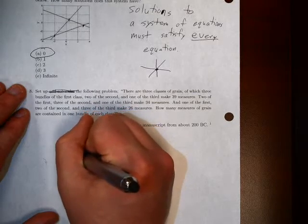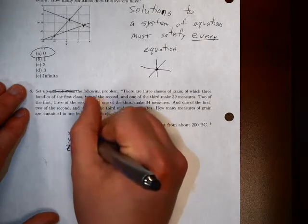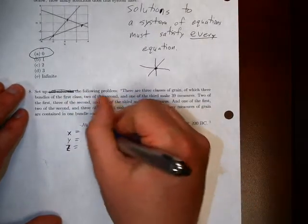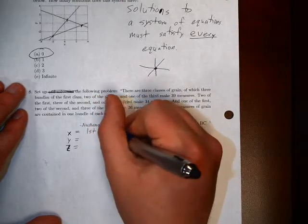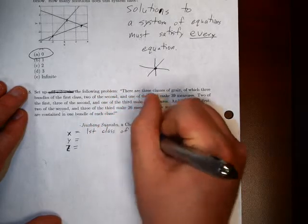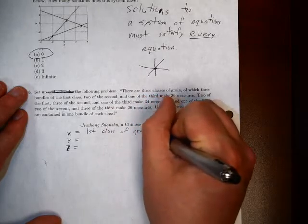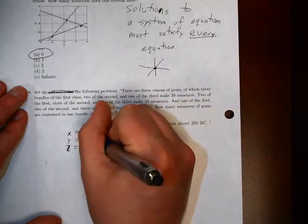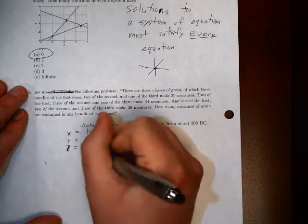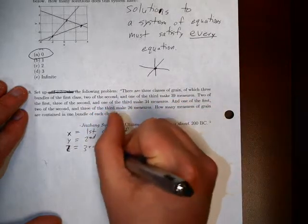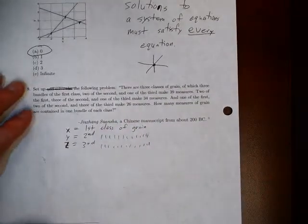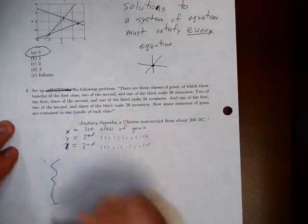And with these variables, we're going to denote what our different classes of grain are. So this is going to be, x is going to be our first class of grain. Y will be our second class of grain. And z will be our third class of grain. So let's create a system of equations.